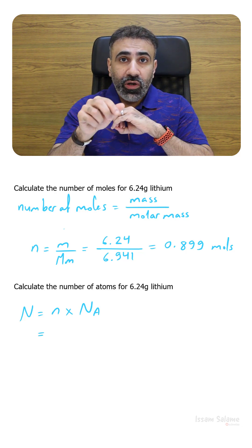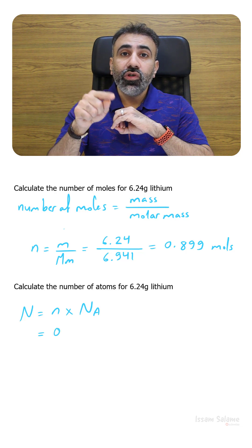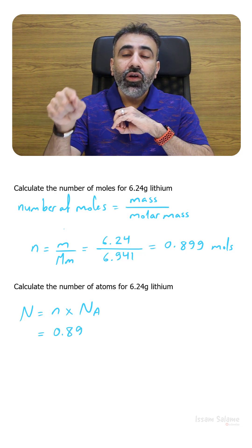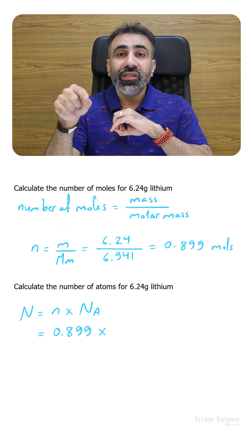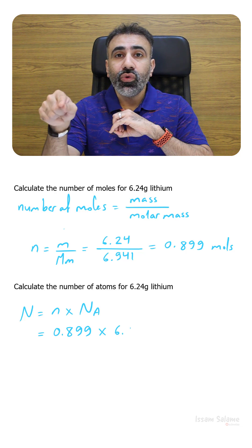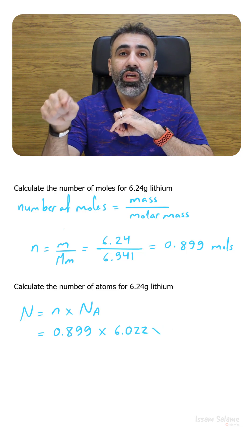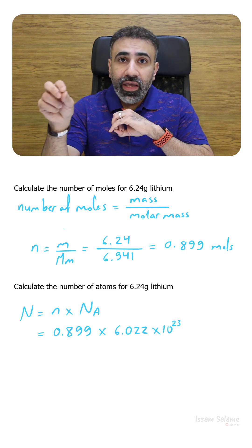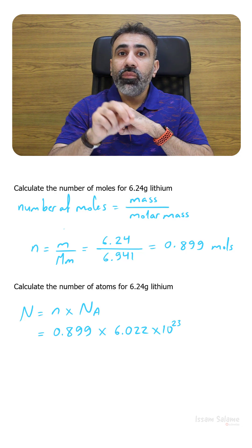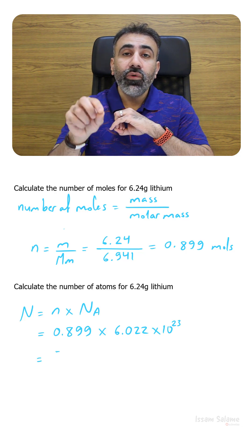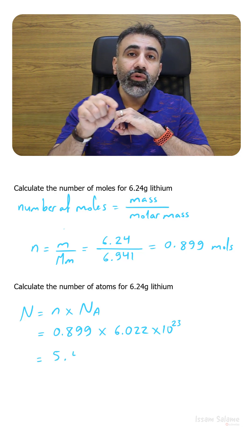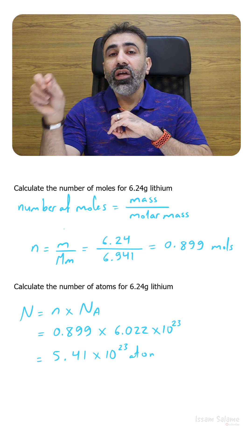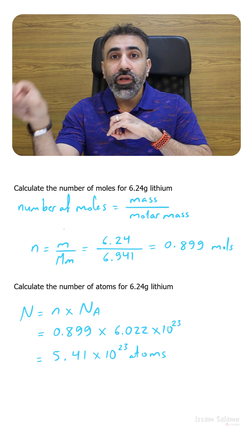The number of moles we calculated in the first part is equal to 0.899. We multiply by Avogadro's number, which is 6.022 times 10 to the power 23. We get the answer, and the proper number of significant figures is going to be equal to 5.41 times 10 to the power 23 atoms of lithium.